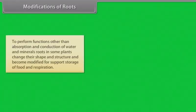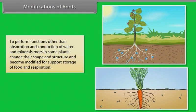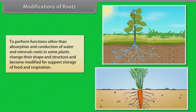Modifications of roots: to perform functions other than absorption and conduction of water and minerals, roots in some plants change their shape and structure and become modified for support, storage of food, and respiration.